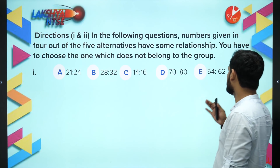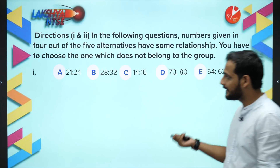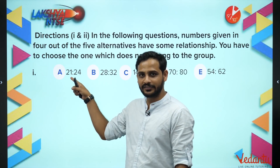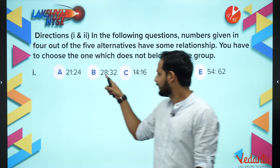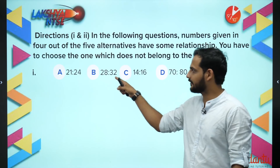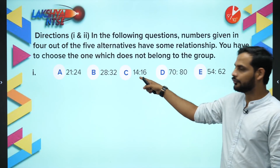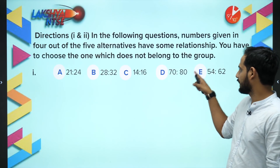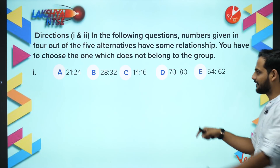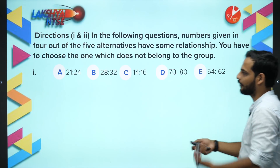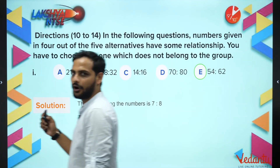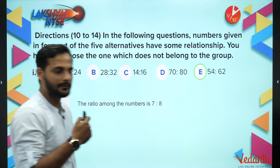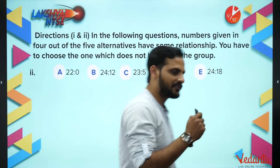Next: 21:24, 28:32, 14:16, 70:80, 54:62. The ratio is clearly 7:8 in most pairs - 4×7:4×8, 2×7:2×8, 10×7:10×8 - but 54:62 does not follow the 7:8 ratio. So option E is the odd one out.